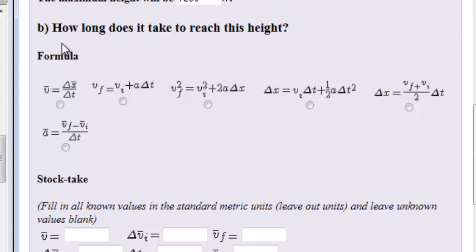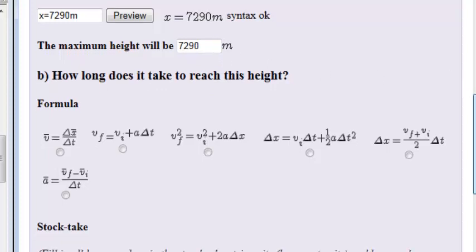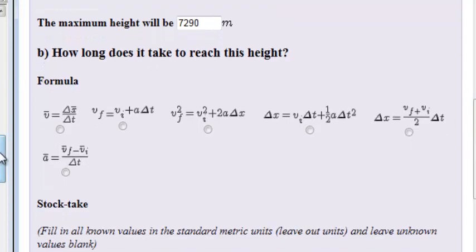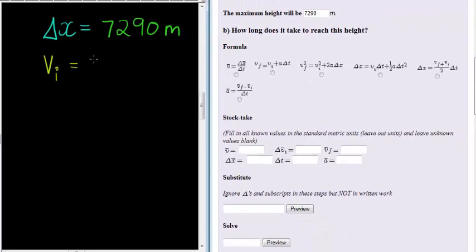In the second part of this question, how long does it take to reach this height? What height is it talking about? Well, it's talking about the maximum height we had to calculate in the previous question. So we already have maximum height as one of our values. In our formula, we know that initial velocity here was given as 378 meters per second.